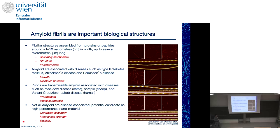We are really interested in how amyloids propagate structure — biological information is encoded in the structure, and how do we propagate that information? What makes certain amyloids a prion — are they more infectious, and if so, why? Independent of disease, many amyloids are very common in biology and are not associated with disease; they actually perform biological functions. You can also engineer amyloid material for technological applications due to their interesting mechanical properties.